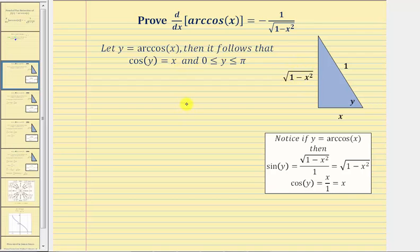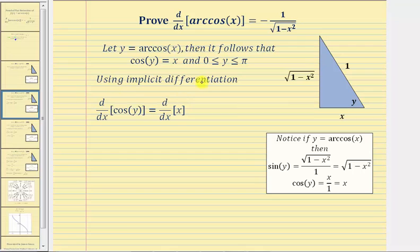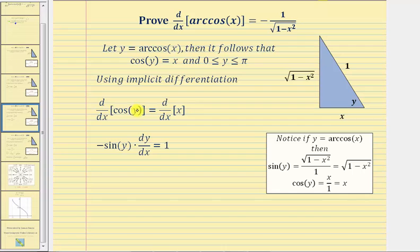For the next step, we'll take the equation cosine y equals x and differentiate both sides with respect to x. This will require implicit differentiation. So we have the derivative of cosine y with respect to x equals the derivative of x with respect to x, which gives negative sine y times dy/dx equals one.